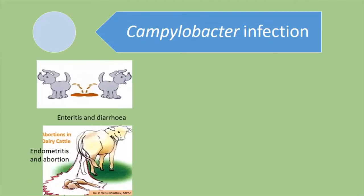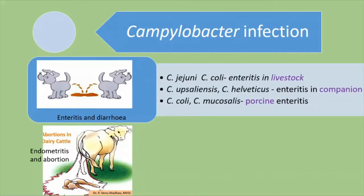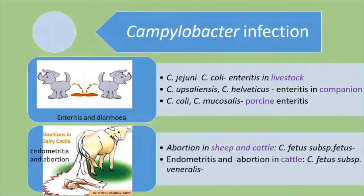There are two forms: the enteric form causing diarrhea, and the endometritis form causing abortion. The organisms responsible may differ. For enteric diarrhea in livestock, the main species are Campylobacter jejuni and Campylobacter coli. In companion animals and pets, it is Campylobacter upsaliensis and Campylobacter helveticus. In pigs, it is Campylobacter coli and Campylobacter mucosalis. For abortion, the main organism is Campylobacter fetus subspecies fetus and subspecies venerealis, affecting sheep and cattle.